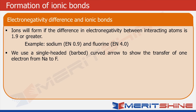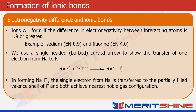We will use a single-headed barbed curved arrow to show the transfer of one electron from sodium to fluorine. Sodium will lose an electron and become the sodium cation, and fluorine will gain an electron and become the fluorine anion. In doing so, both sodium and fluorine have acquired their nearest noble gas configuration.